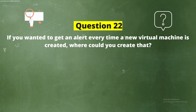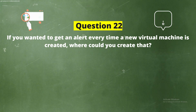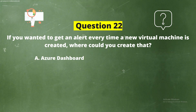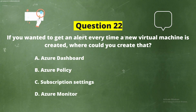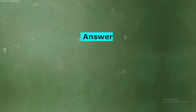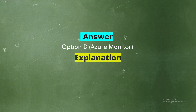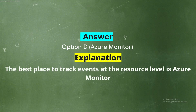Question 22. If you wanted to get an alert every time a new virtual machine is created, where could you create that? Option A: Azure Dashboard. Option B: Azure Policy. Option C: Subscription Settings. Option D: Azure Monitor. The correct answer is Option D, Azure Monitor. Explanation: The best place to track events at the resource level is Azure Monitor.